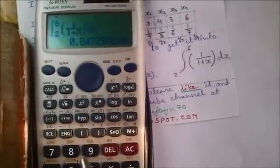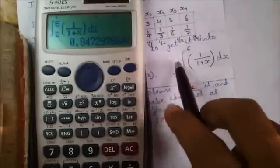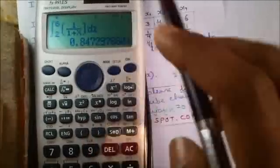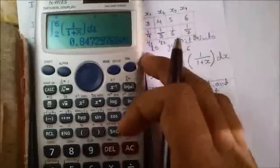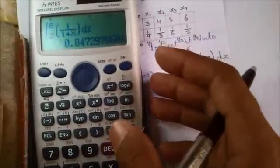So you will get the answer directly, that is 0.8472. You can do the math using this technique and you can check the answer will be the same. But you did it without doing the math. It's good for MCQ type questions.